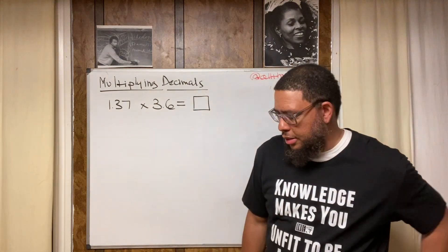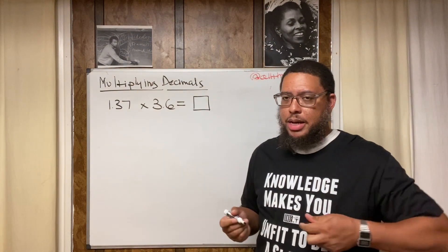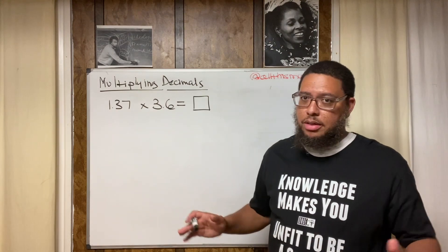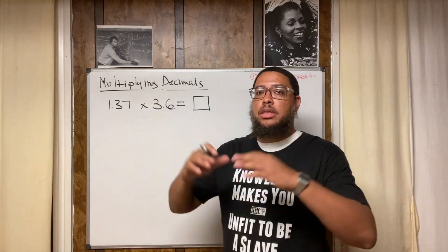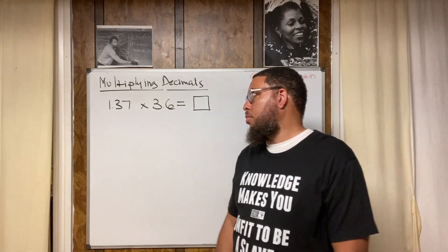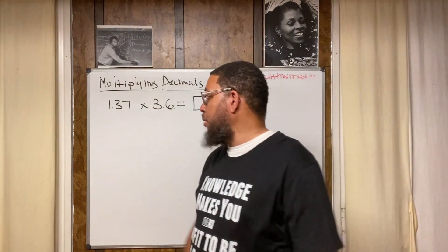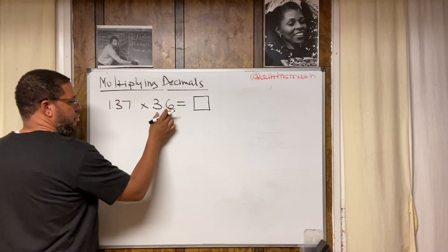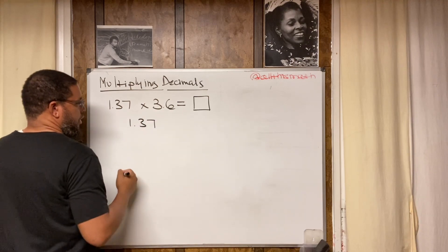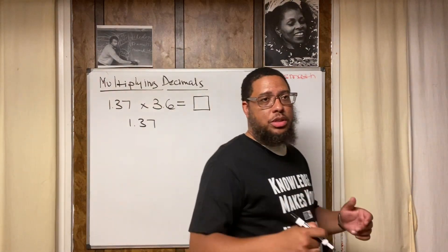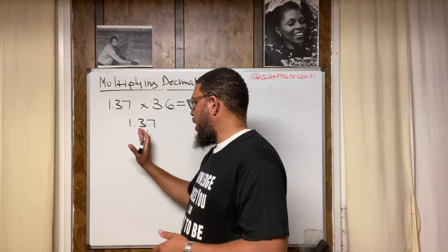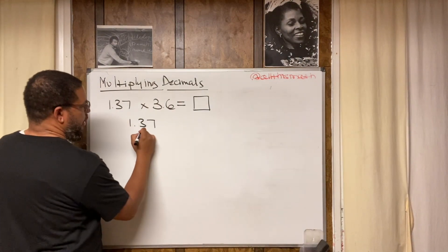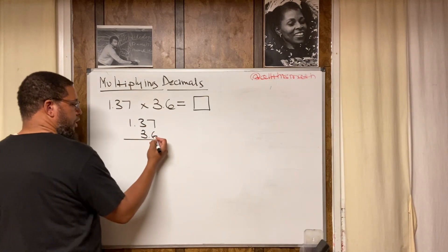All right, let's get into this: 1.37 times 3.6. There are many ways we could multiply these two numbers. Parents, don't shy away from different methods of multiplying decimals — embrace the variety and options. But what I'm going to use here is the standard algorithm that many of us learned 30 years ago in elementary school. The number with more digits I put on top — 1.37 has three digits, 3.6 has two — so 1.37 goes on top. I'm not lining the numbers up by place value or decimal point; the 6 goes under the 7 and the 3 goes under the 3.